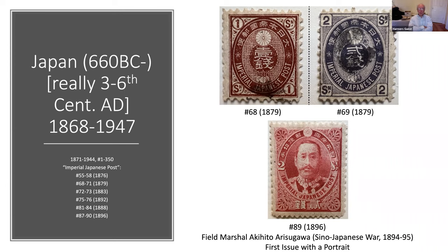Here are examples where stamps actually had the words 'Imperial Japanese Post' in English — the earliest ones from 1876, where you can actually see those words. The top two stamps are part of that set and design. The first person to appear on a Japanese stamp was not the emperor; it was a field marshal who was one of the leading generals in the Sino-Japanese War — the first Japanese stamp to have a person's portrait on it.